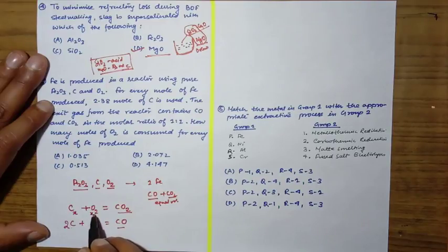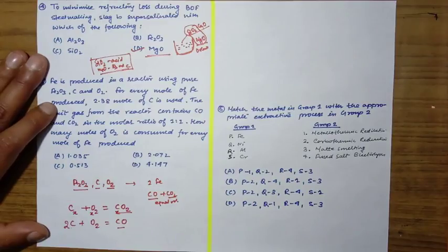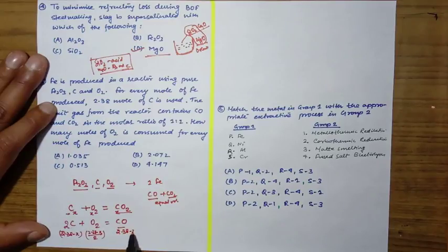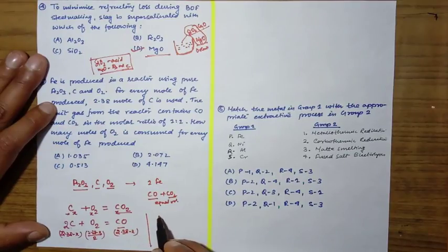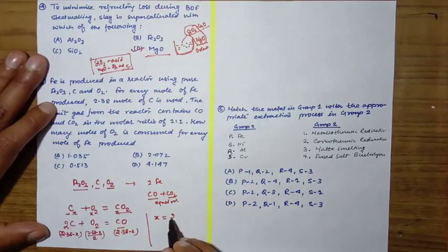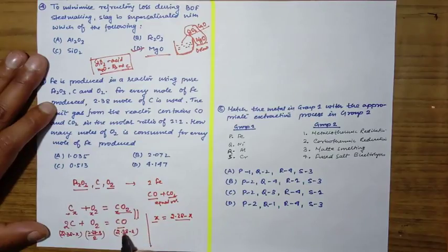Let's assume x moles of carbon reacts with x moles of oxygen to give x moles of CO2. The total carbon left will be 2.38 minus x, which reacts with (2.38-x)/2 moles of O2 to give 2.38-x moles of CO. From the question, x equals 2.38-x, so x equals 1.19.